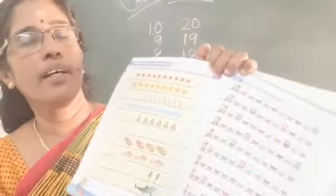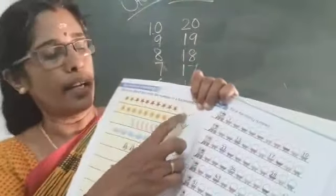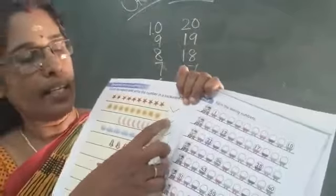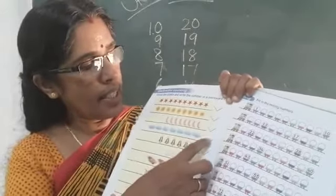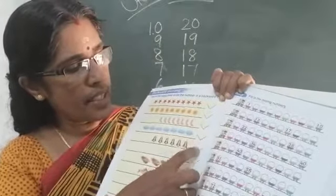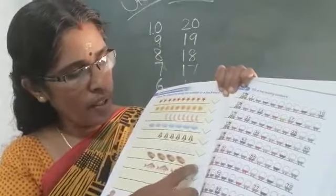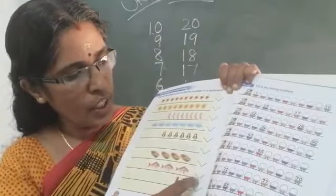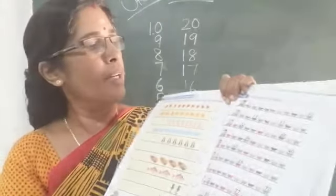This number is what is written. Now backward count here: 10, 9, 8, 7, 6, 5, 4, 3, 2, 1. Okay?